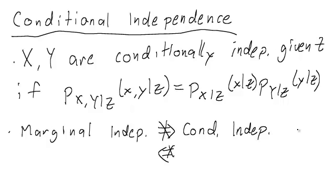So two random variables X and Y could be independent but not conditionally independent given something else. Or two random variables could be conditionally independent but not marginally independent. And let's look at an example that illustrates this.